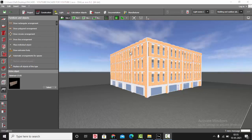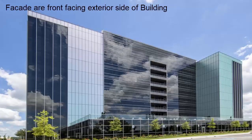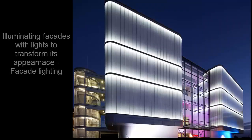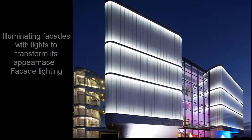Let's get started with facade lighting. What is a facade? A facade is the front-facing exterior side of a building. Facade lighting is where we illuminate the exterior side of a building with light so that we can transform the entire building.